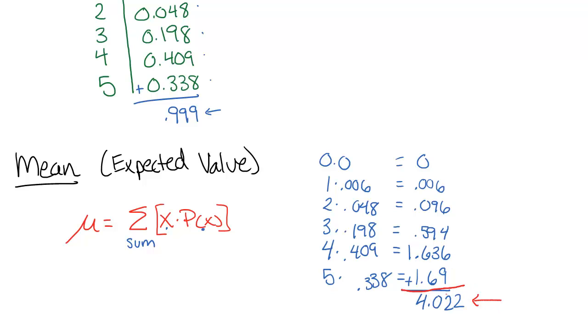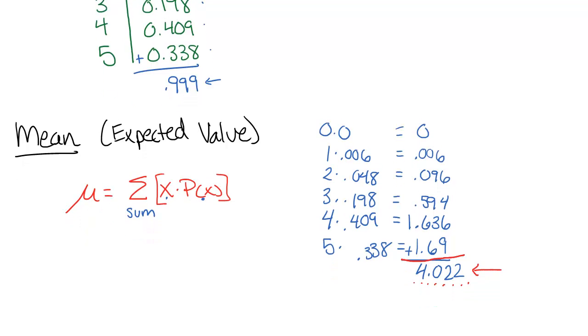So one thing to be careful of is that the expected value is not, in this case, how many flights are going to be on time. Of course, we can't have 4.022 flights on time. This isn't a whole number. But this is just saying, if we did this over and over and over again, this would be the average number. This is the expected number. So we should expect that sometimes there will be more than four on time, sometimes there will be less than four on time. But on average, it's just over four flights would be on time for this particular distribution.